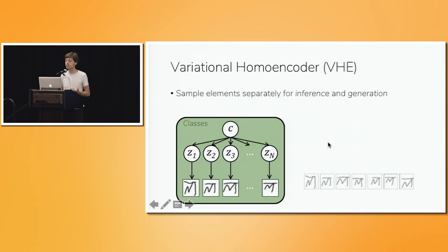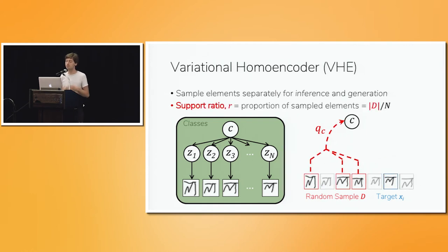And the way we're going to do this is to sample elements separately for inference and generation. So at training time, we first use some element, k, to be our target image. And then we randomly sample a new subset of elements from the same class and feed those elements to the encoder network to infer the latent variable for that class. So it could be these three, or these three, or these three. And so that R I was talking about, we'll call it the support ratio. It's the number of elements we sample as a fraction of the whole class.